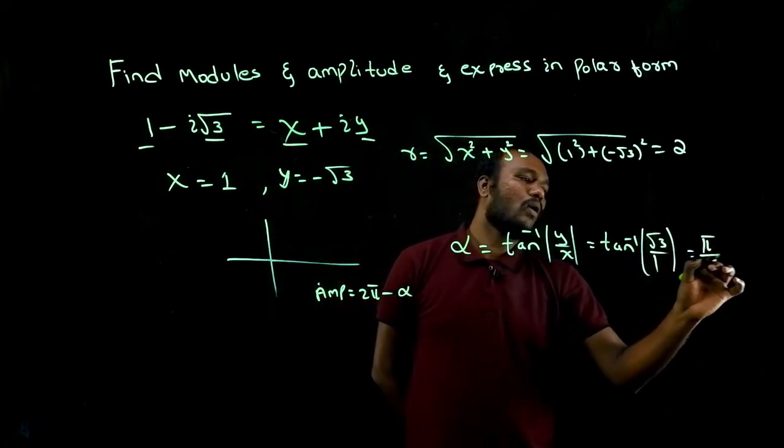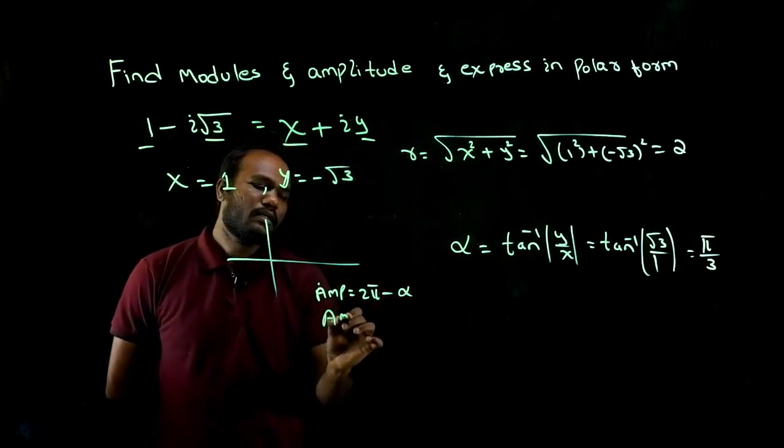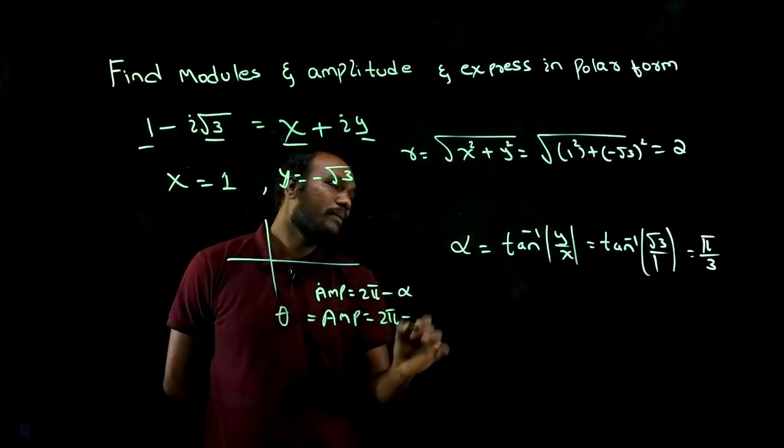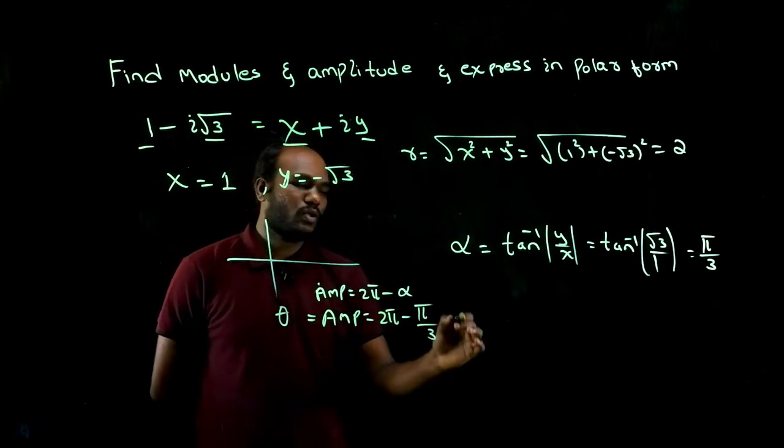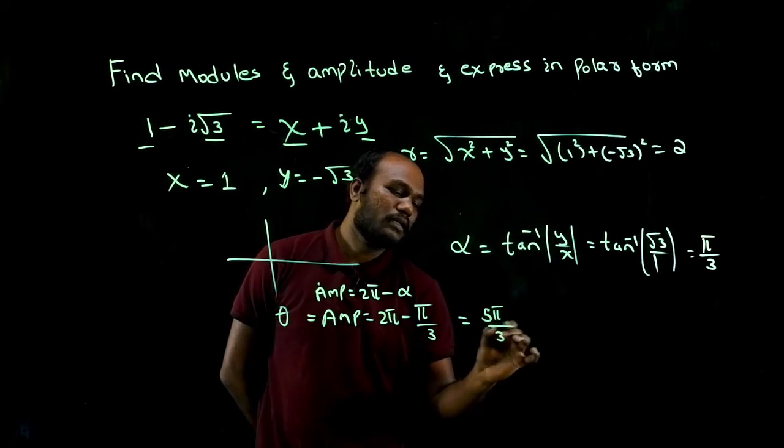So amplitude is nothing but, you can also call it as theta, is nothing but 2 pi minus pi over 3. So how much will I get? 3 into 2 is 6, so I'll get 5 pi upon 3.